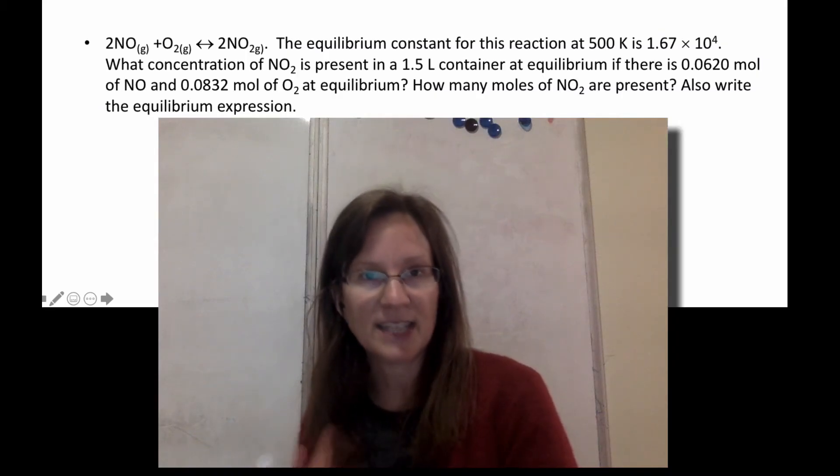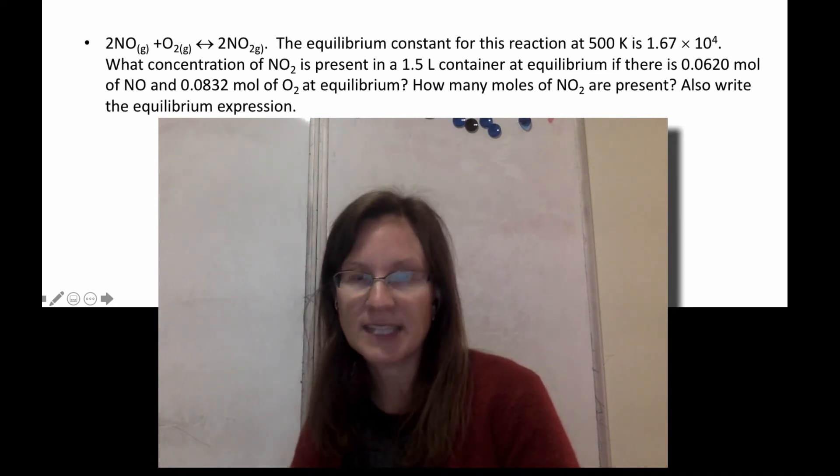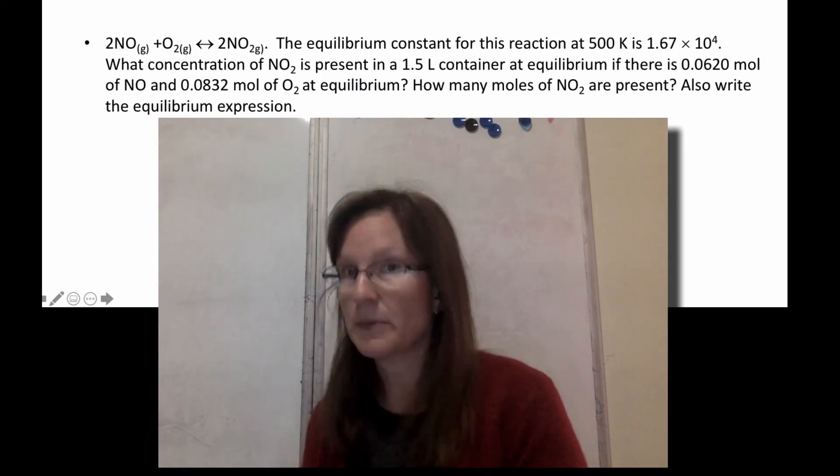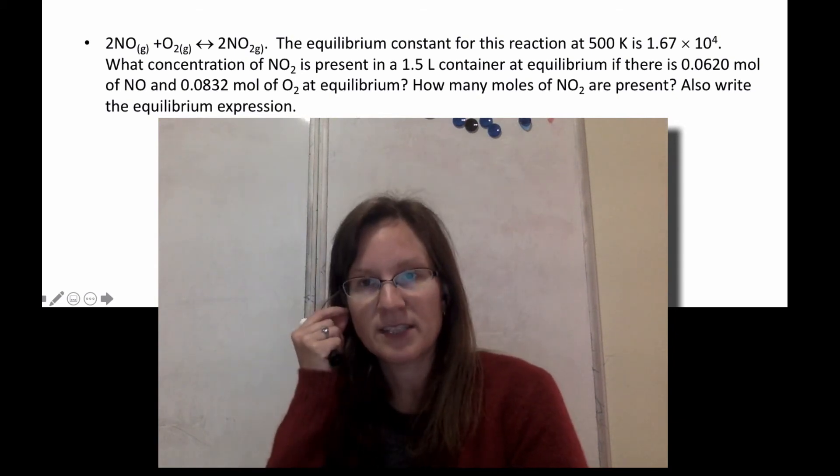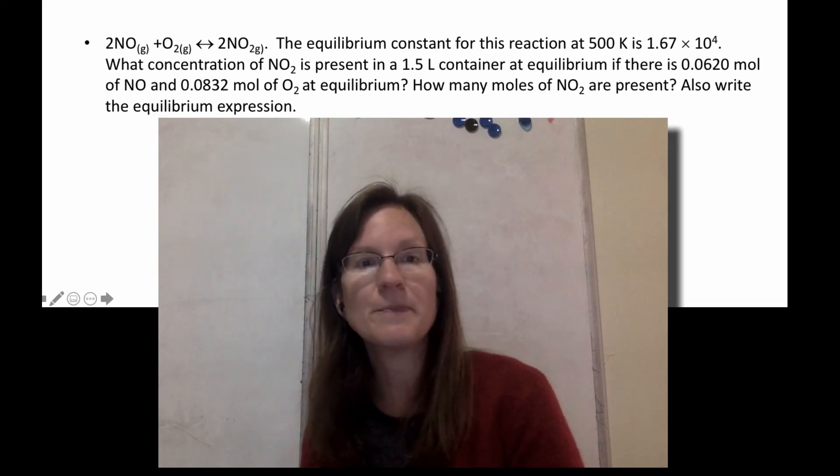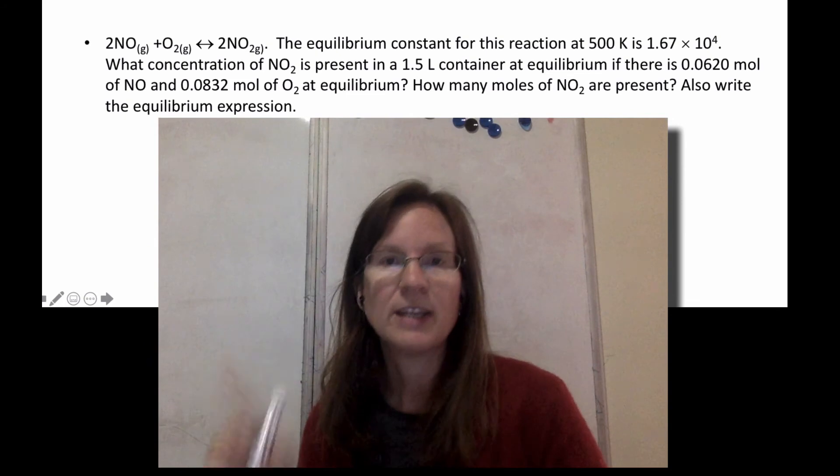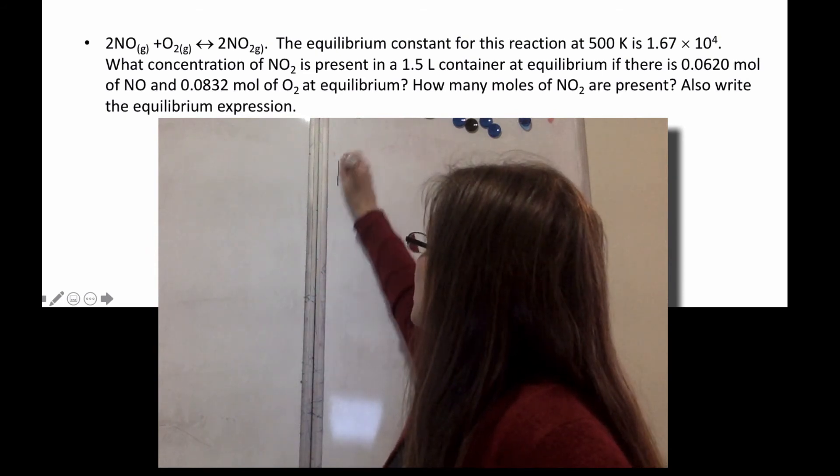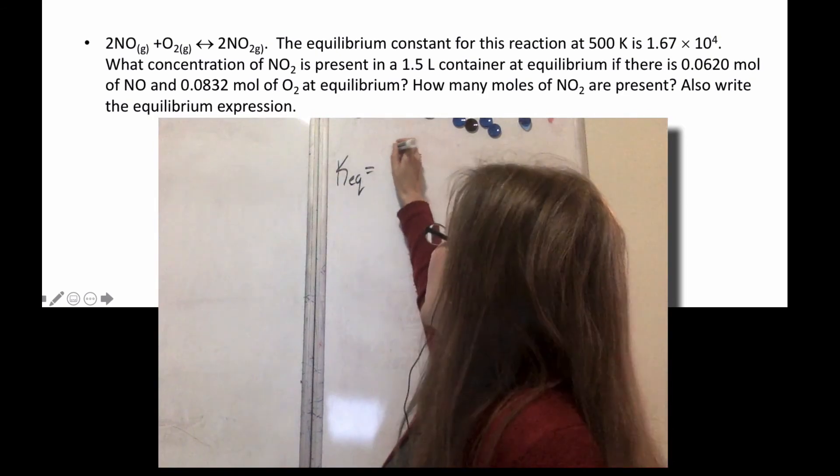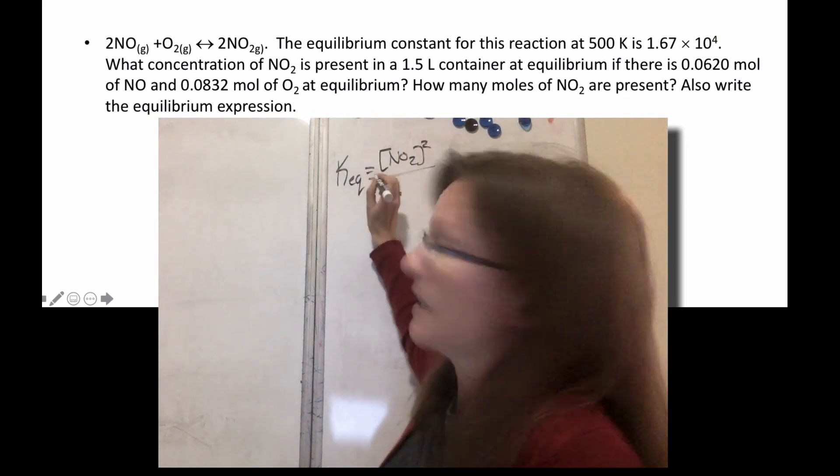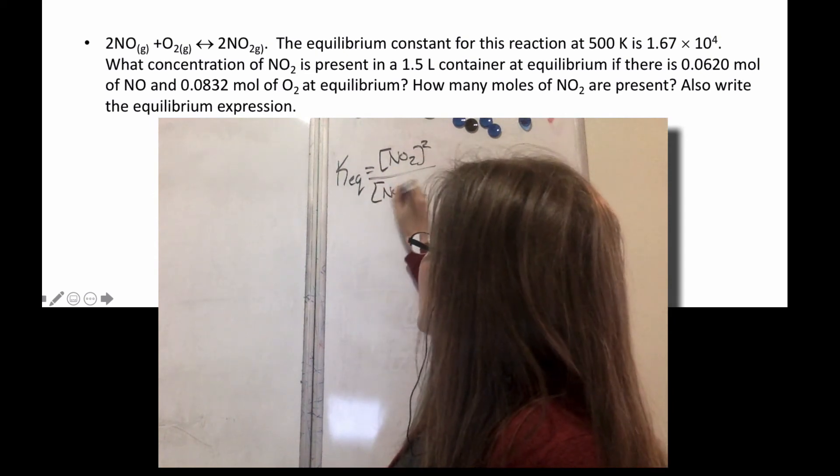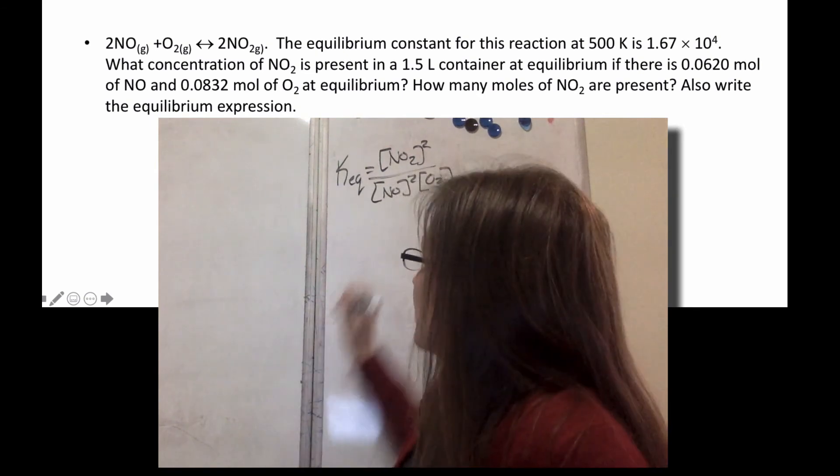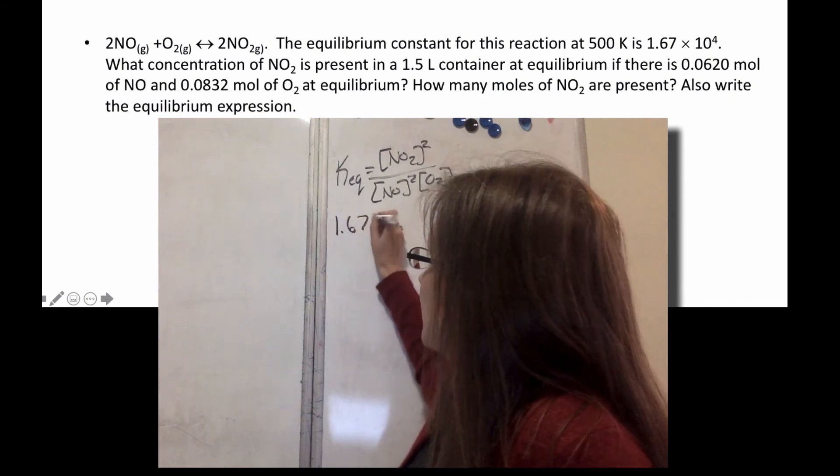You'll also have math as part of the test, and that's what this next problem looks like. I give you the equilibrium constant. Realize that I say it's this at 500K—that's the temp. 500K is not the equilibrium constant; that is the temperature in Kelvin. So the equilibrium constant is 1.67 times 10 to the fourth for this problem. I ask the concentration of NO2, and then I give you a bunch of information. Step one for all your math problems will be to write a K because you need it in order to solve the problem. So in this particular problem, it's always going to be products over reactants. So my product is NO2 and that's going to get squared, and then my reactant is NO and that will get squared, and then O2. So that's the equation I'm actually going to plug into.